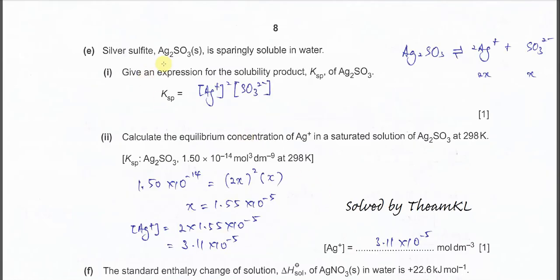Part E, silver sulfide Ag2SO3. So it's sparingly soluble in water. So part 1, give the expression of solubility product Ksp for this salt. So we just consider the concentration of the ions formed. So it's silver ion, concentration of silver ion squared, because the coefficient is 2 here, times the concentration of the sulfide ion. So this is the expression.